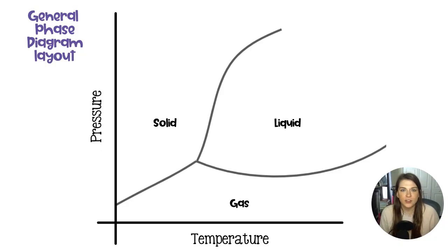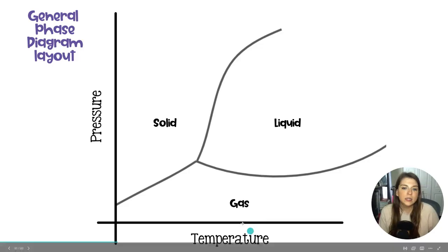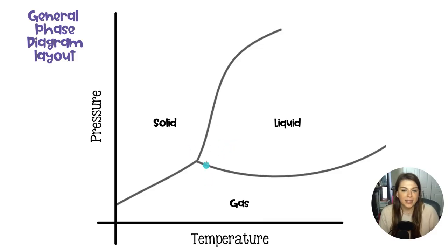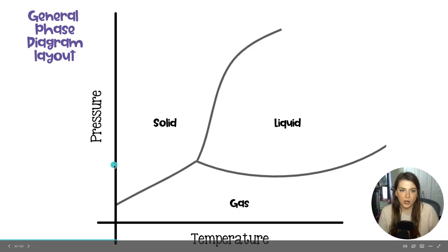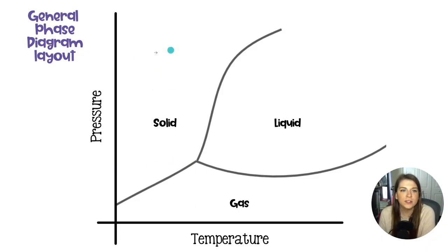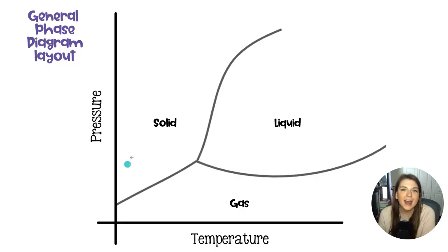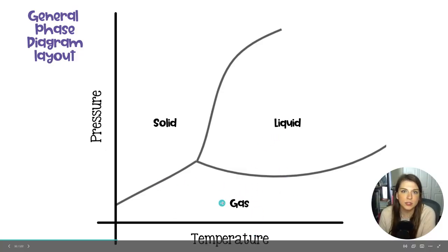This is the layout for a general phase diagram. All substances are going to follow this general format, but their specific lines are definitely going to wind up in different places. This right here is that triple point — it's where a substance can be a solid, a liquid, and a gas all at the same time because we're at the sweet spot for temperature and pressure. When we are under decently high pressure and a low temperature, we are going to find ourselves looking at a solid. As that temperature increases, this is going to very easily become a liquid. And when we have a sample at a very low pressure, it is going to behave like a gas.